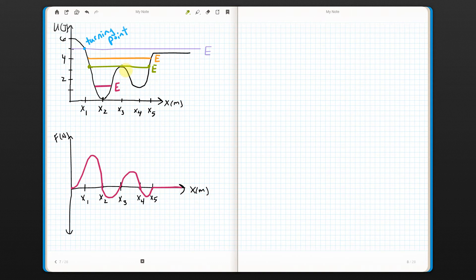If we placed a particle with green energy at x equals 3, at that point, its potential energy is exactly equal to its total energy, so the kinetic energy would be zero at that point. And at x equals 3, the force is zero.